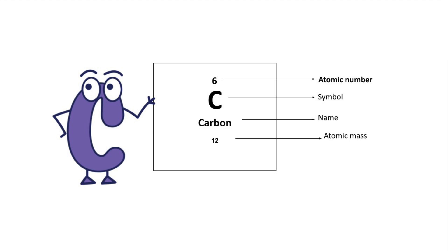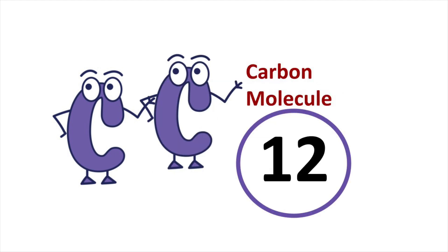Carbon atomic number 6. In carbon molecule there are two carbon atoms, so total number of electrons in carbon molecule is 12.